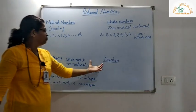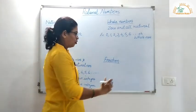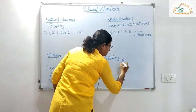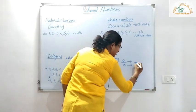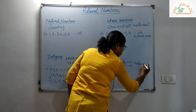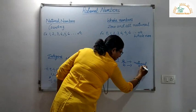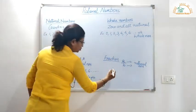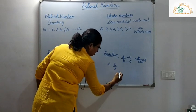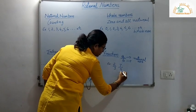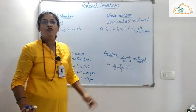Now we move on to fractions. A number of the form A upon B, where A and B are natural numbers, is called a fraction. For example, 7 upon 3, 7 upon 9, etc. — all these are examples of a fraction.